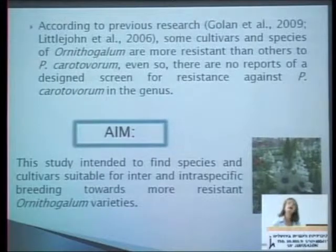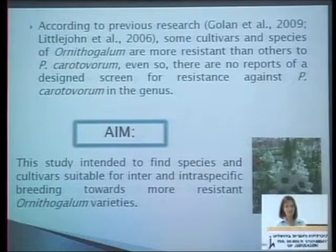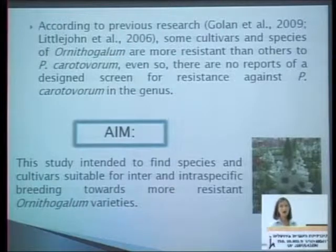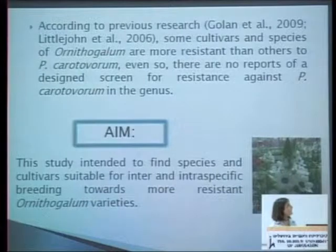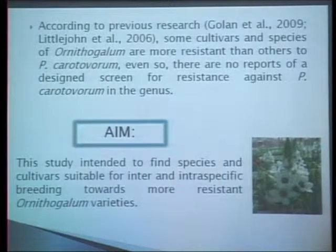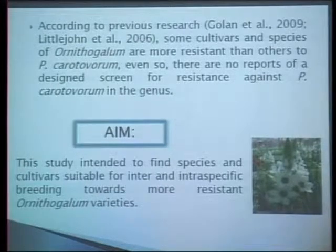Today, the main control is through cultural practices and there is no chemical control in existence. Because of this, the only option is through breeding. According to previous research, some cultivars and species of Ornithogalum are more resistant than others to Pectobacterium, but there are no reports of a designed screen for resistance against this pathogen in the genus. This study intended to find species and cultivars suitable for inter- and intraspecific breeding towards more resistant Ornithogalum varieties.